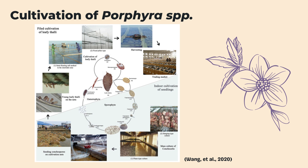Nearly 1 million tons wet weight of Porphyra is annually harvested. Japan alone produces an average of 400,000 tons of Porphyra per year. It has been cultivated for the past 100 years in Japan, and today it is one of the largest mariculture industries in Japan, Korea, and China. In 2008, Japan, Korea, and China produced 8,980,000,000, 8,600,000,000, and 4,000,000,000 nori sheets, respectively.